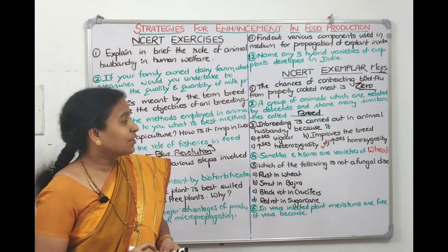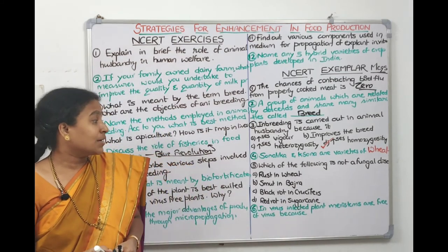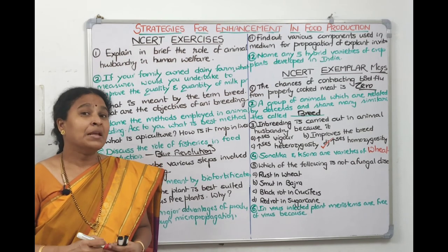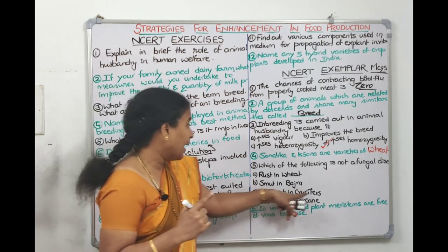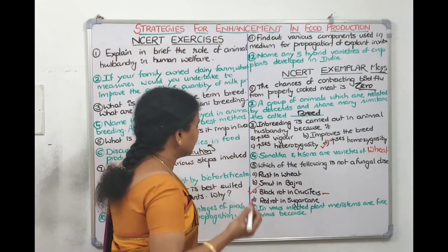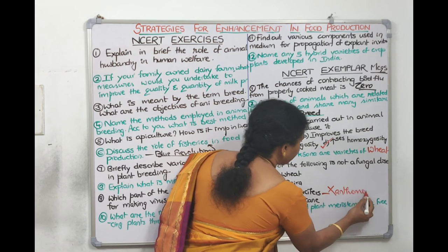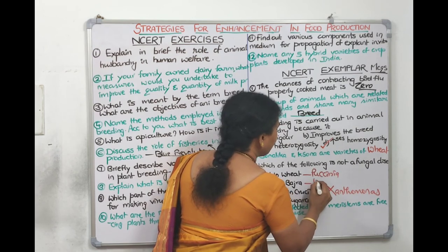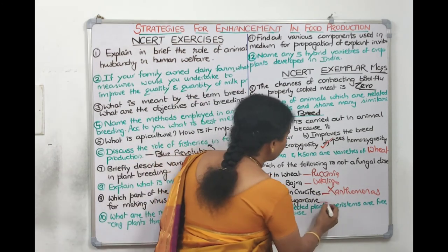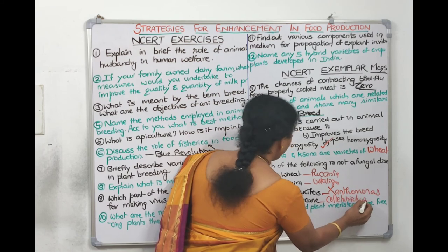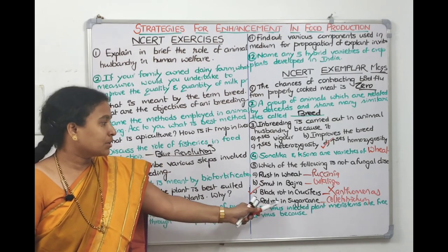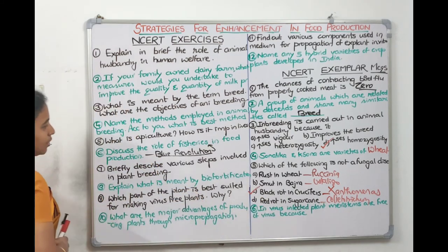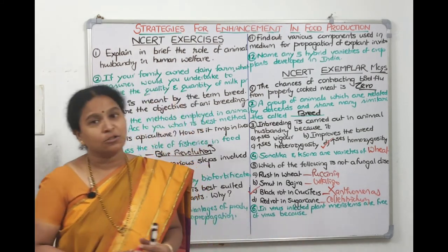Fourth exemplar question: which of the following is not a fungal disease? Rust of wheat is a fungal disease caused by Puccinia. Smut is a fungal disease caused by Ustilago. Black rot of crucifers is caused by a bacterium called Xanthomonas — so it is not a fungal disease. Red rot is caused by Colletotrichum, which is a fungus.